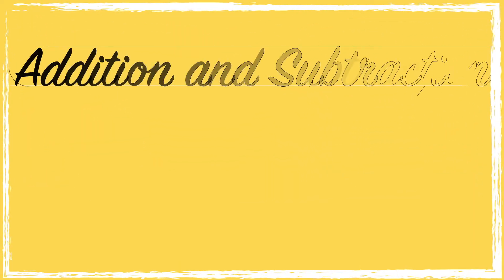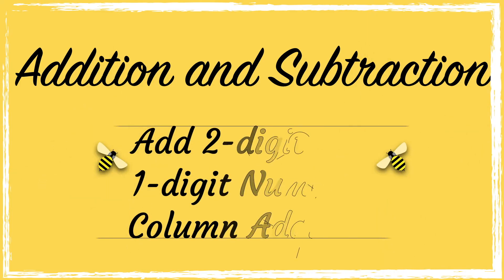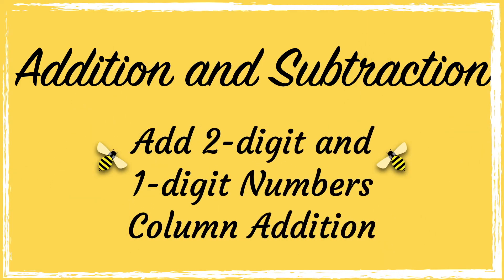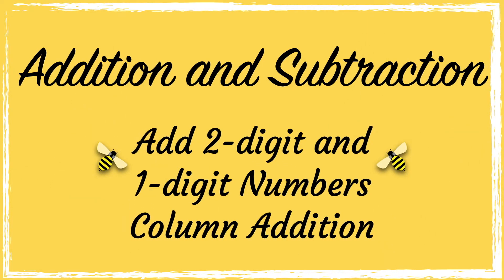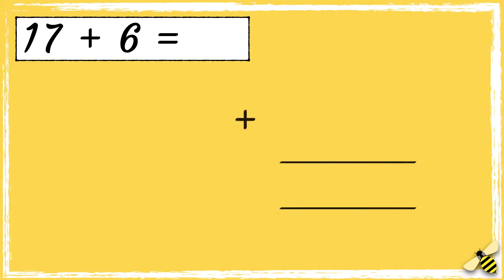In today's video we're going to use column addition to add two-digit and one-digit numbers. Here is a number sentence: 17 add 6. It's really important to line the numbers up correctly when you're doing column addition.